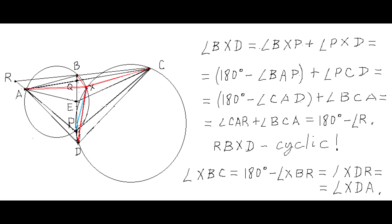This is the key discovery: in quadrilateral RBXD, opposite internal angles R and BXD are supplementary, meaning RBXD is a cyclic quadrilateral. Since angle XBC is supplementary to angle XBR, and in cyclic quadrilateral RBXD angle XBR is supplementary to angle XDR — which equals angle XDA — we obtain that angles XBC and XDA are equal. This is the second required property of point X.